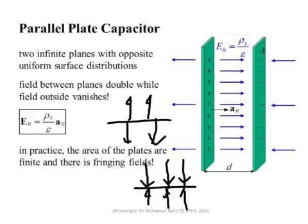Between the plates, both contributions point in the same direction so they add. Outside, one plate creates a field pointing upward while the other creates a field pointing downward — they cancel. So ideally we have no field outside. In reality, capacitors have a finite area and there is a fringing field, so there can be some weak field outside.